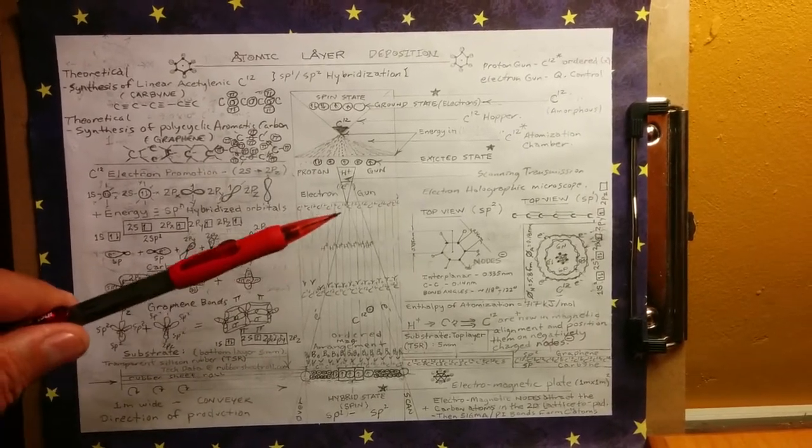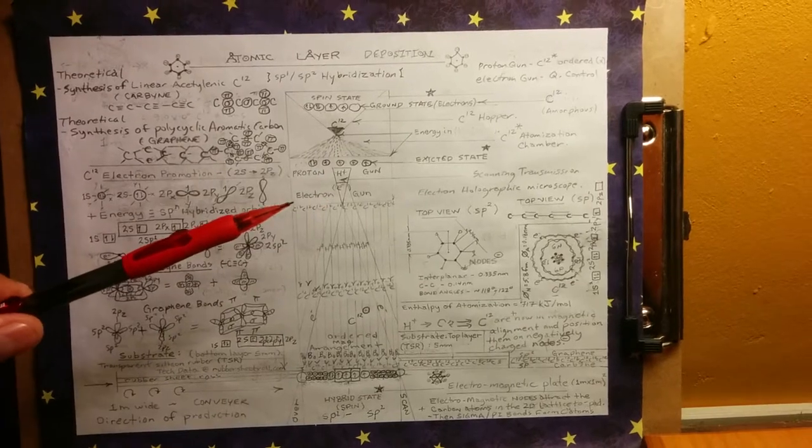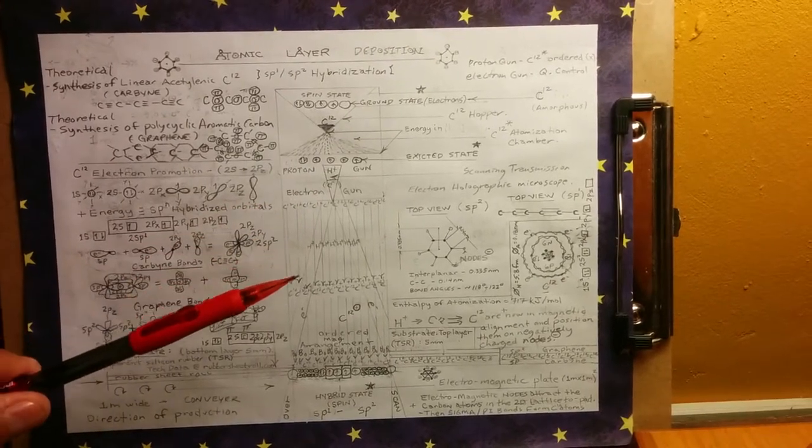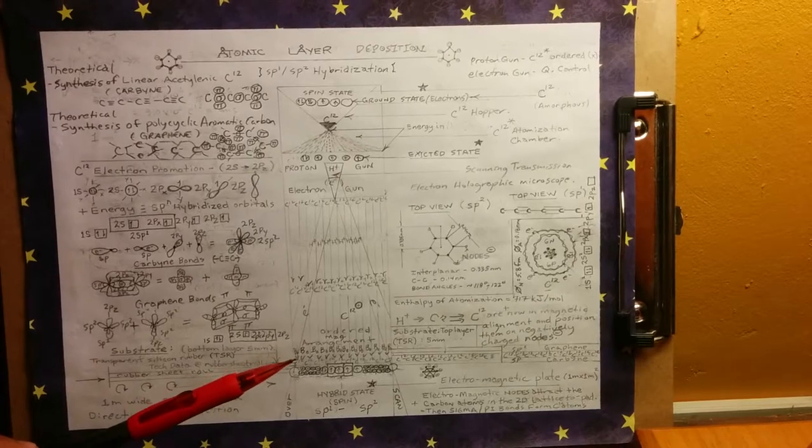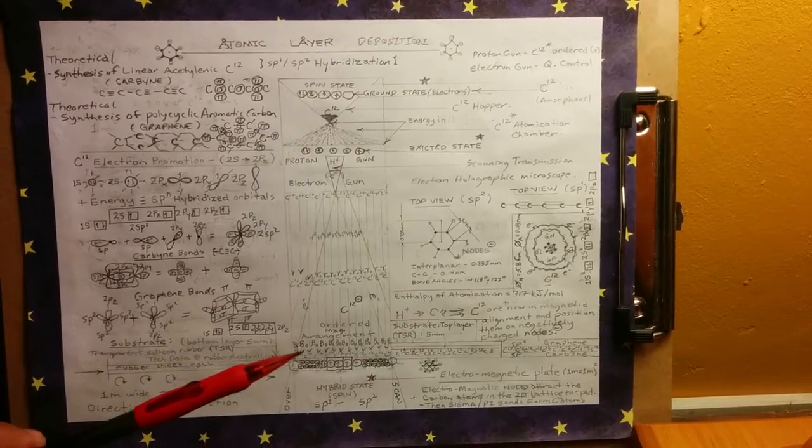They're falling through space and time. Our electron gun is our microscope. That's for quality control, so we can see the carbon atoms landing on the substrate down here, which is the applied magnetic field.